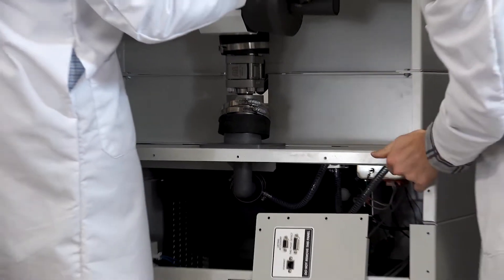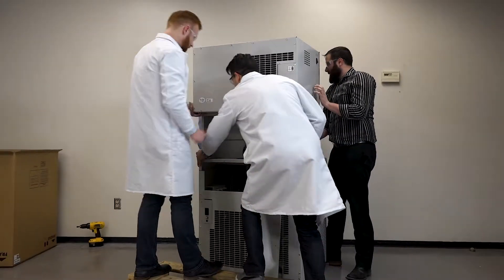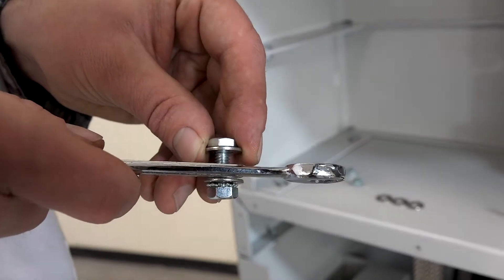Align the four mounting holes in the stopper and tray dryer support stand with the four holes in the top of the freeze dryer. Install the four bolts, nuts, and washers provided.